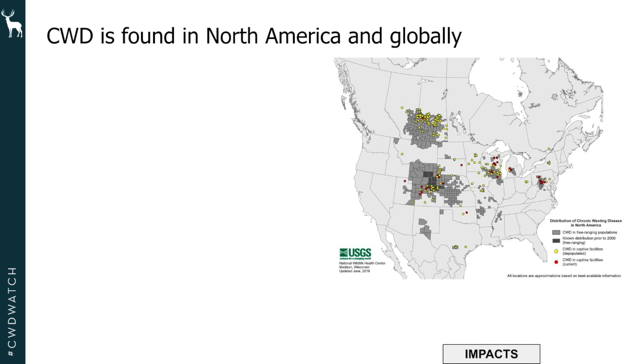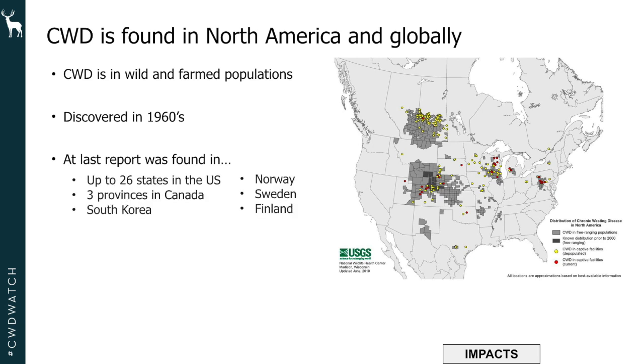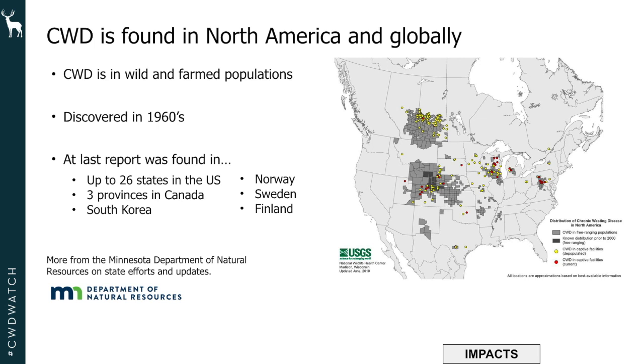Where is CWD geographically? It's found in North America and globally. It occurs in both wild and farmed populations. It was discovered in the 1960s in Colorado, and according to the latest USGS report, it has been found in 26 states, three Canadian provinces, and four countries outside of the US. For Minnesota-specific surveillance efforts, the DNR will cover what's happening in the state.